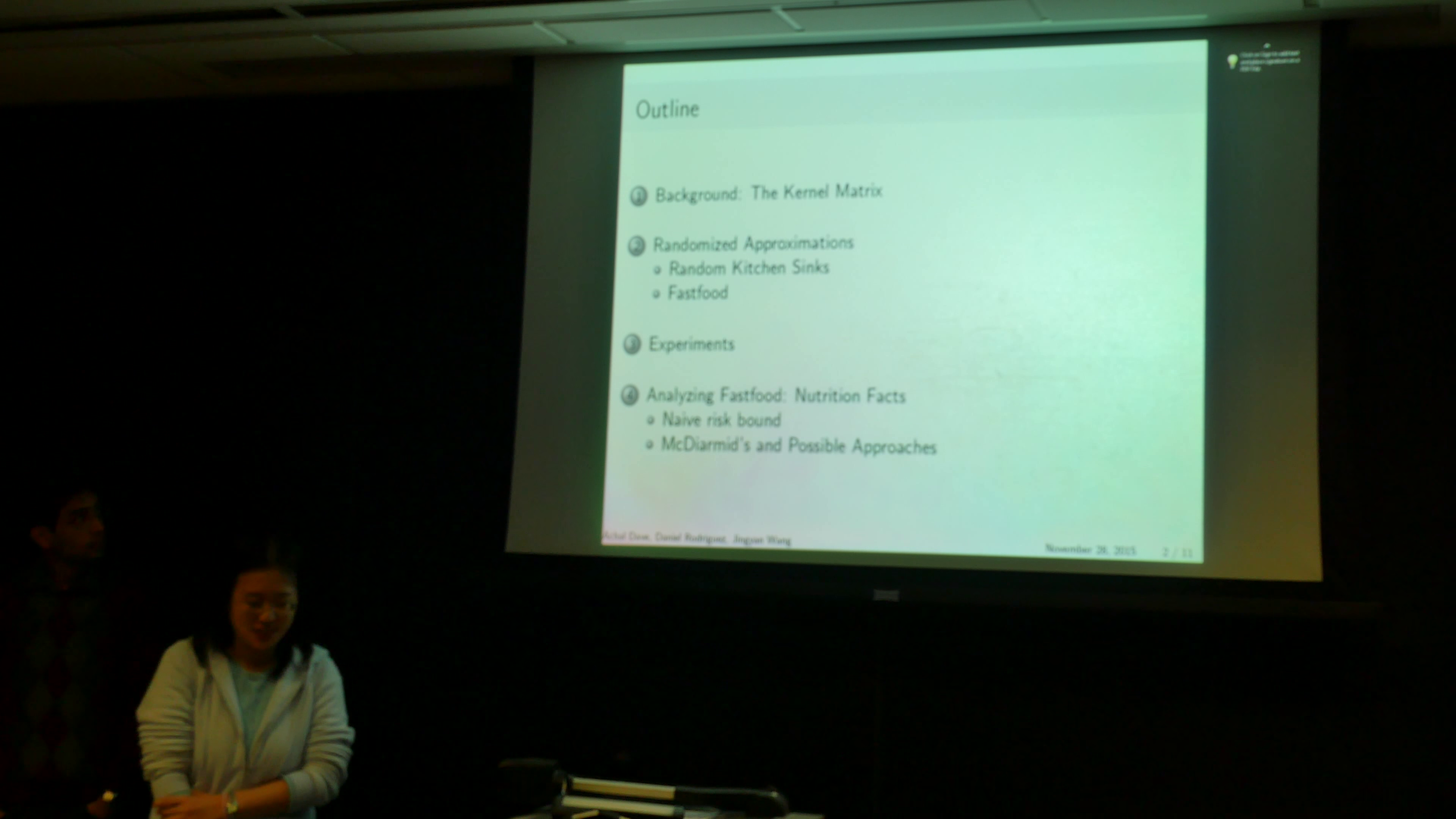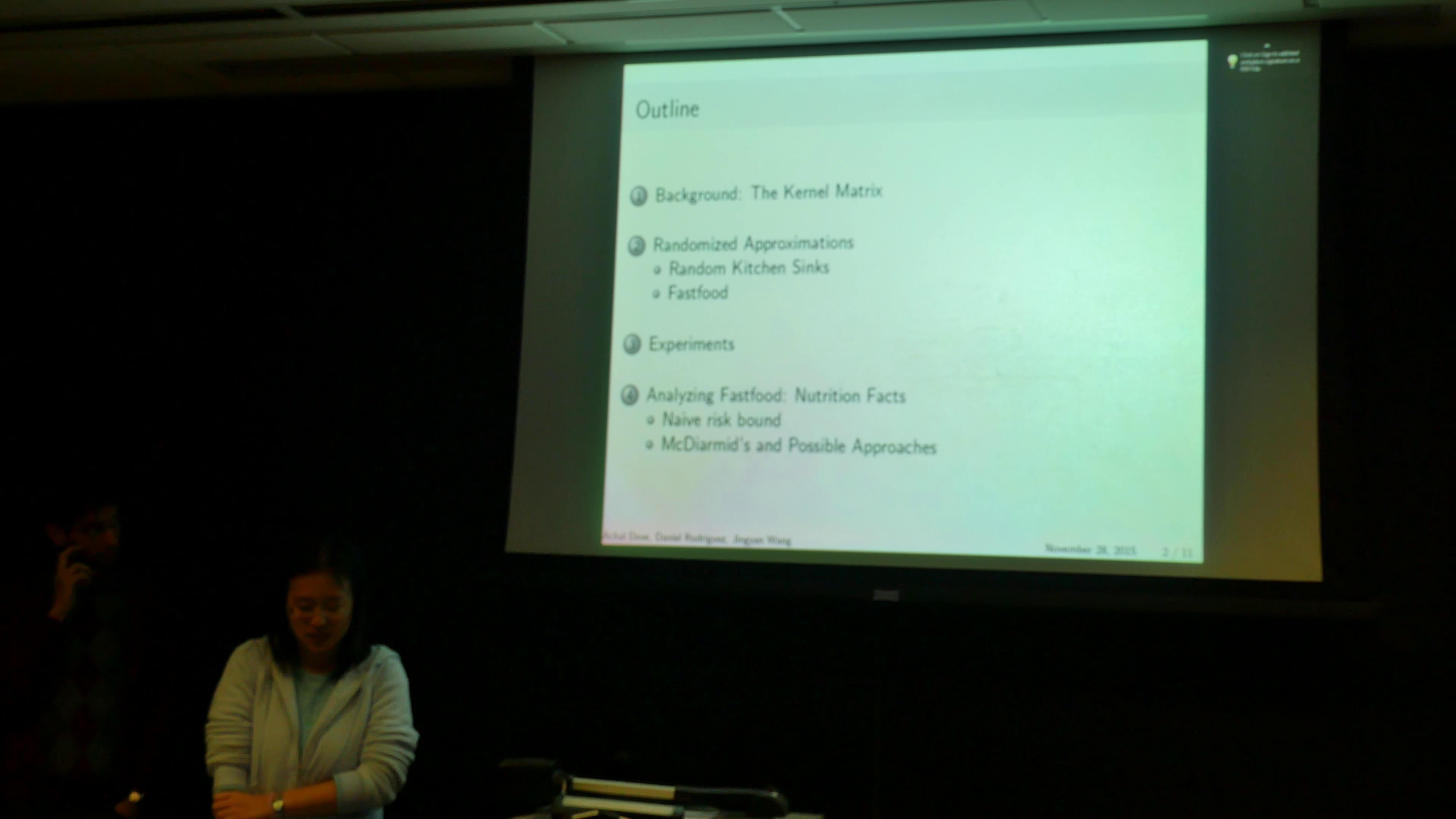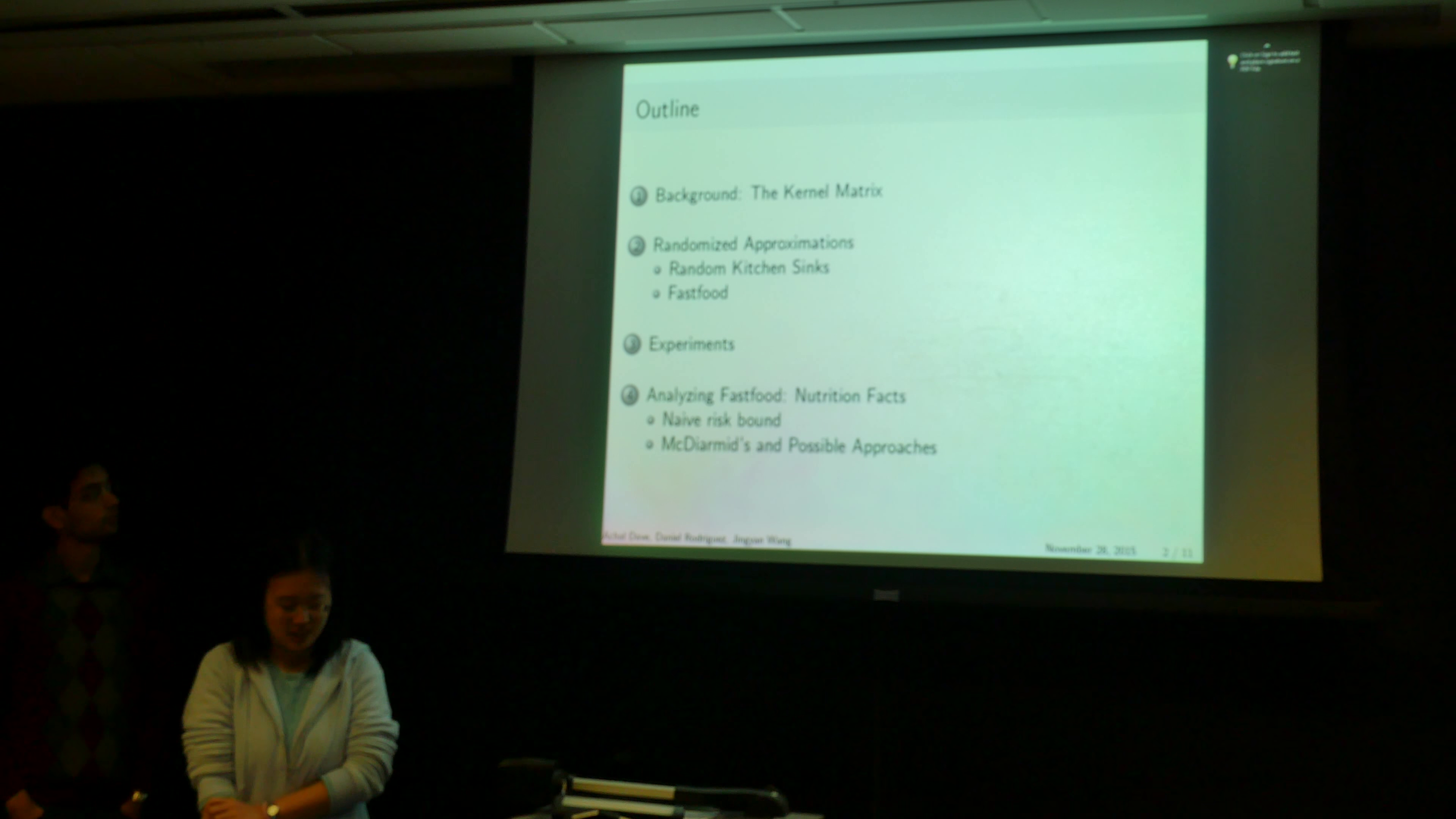I will start with a brief review on the kernel method and kernel matrix. I'm going to introduce the randomized approximation technique called random kitchen sinks, which is the method that fast food builds on top of. And we are going to introduce fast food. We present experiments in order to provide insight into how fast food works and how fast food compares to the prior methods. Then we show our analytical theoretical attempts on improving the response and also improving the kernel approximation error.